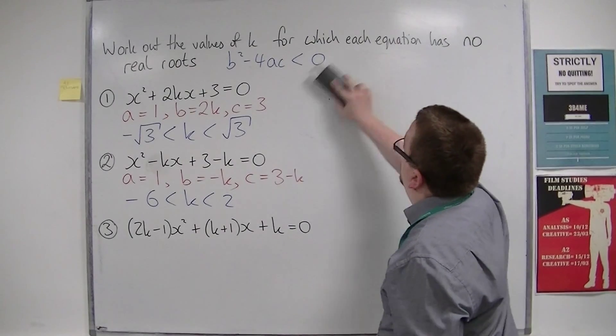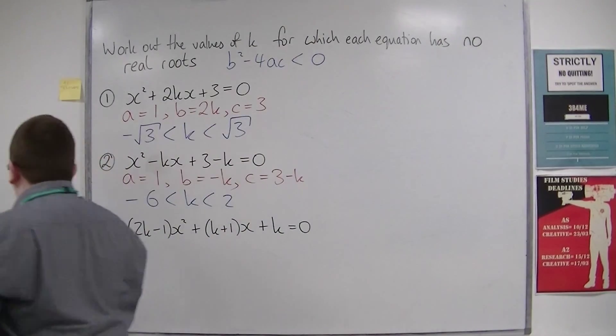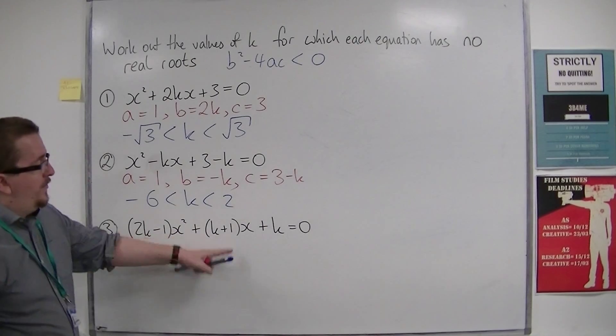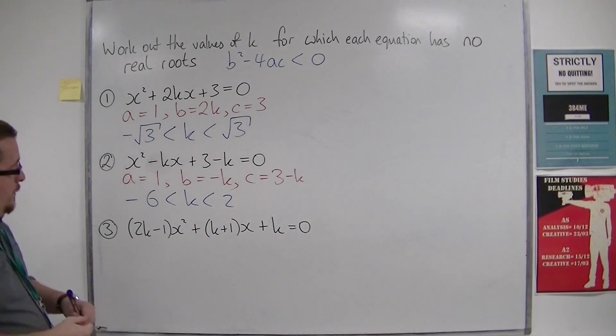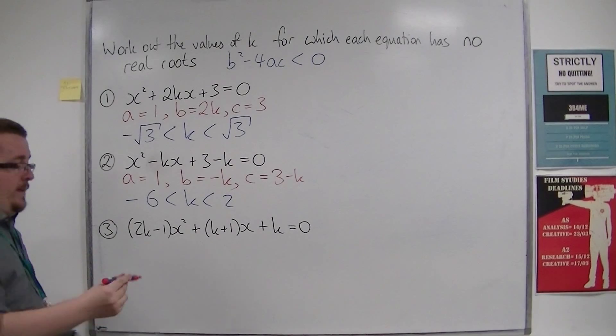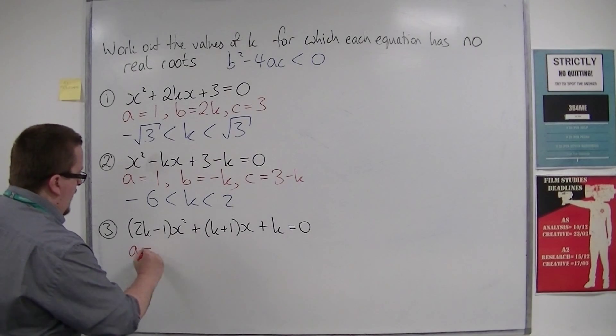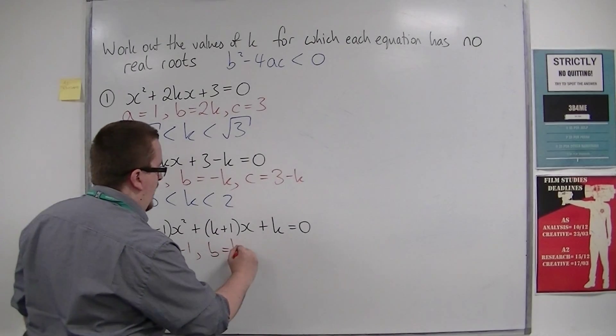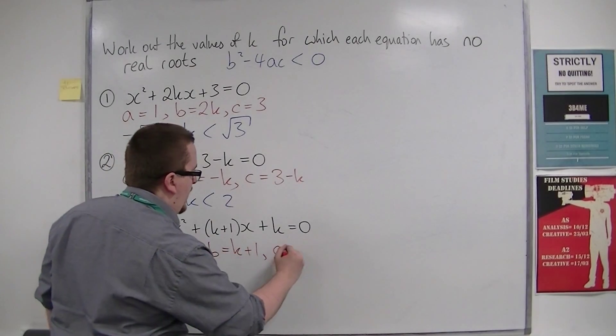Number 3 looks quite complicated: (2k - 1)x² + (k + 1)x + k = 0. First of all, a, b, and c. a is 2k - 1, b is k + 1, and c is k.